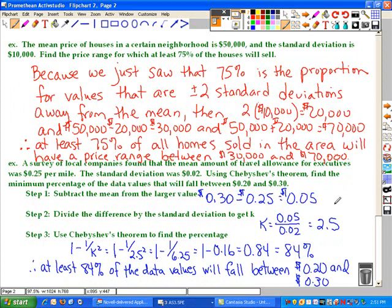Two examples that we're going to use to demonstrate the use of Chebyshev's theorem are on this particular slide. The first example says the mean price of houses in a certain neighborhood is $50,000, and the standard deviation is $10,000. We're to find the price range for which at least 75% of the houses will fall.